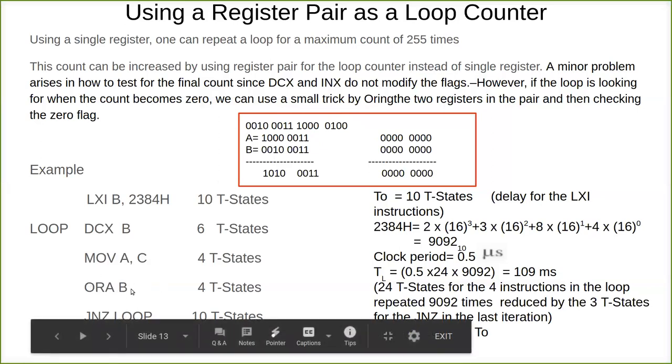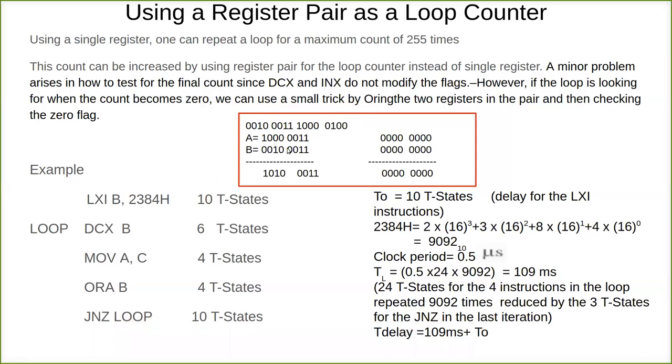Now we do ORA B operation. ORA B means OR the value of B register with the accumulator. Already we have moved the value C to accumulator. Now when you OR, what happens? 1, 1 result 1, 1, 1, 1, 0, 0, 0, 1, 0 and 1. This is for doing ORA B operation.